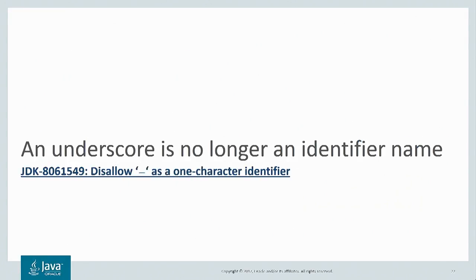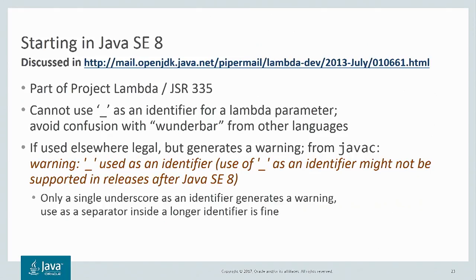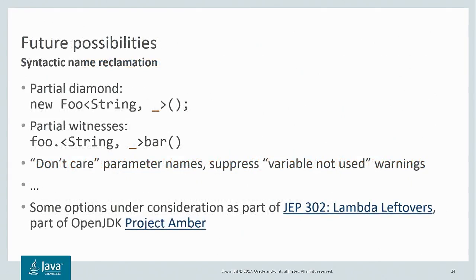The next two small language changes are updates to Project Lambda features added in JDK 8. First, underscore is no longer an identifier name. Starting in JDK 8, the compiler issued warnings if you used underscore as an identifier, warning that it might not be allowed in future versions of the platform. And indeed, now in JDK 9, it is not allowed — what was a warning message is now an error. We want to reclaim the underscore as syntactic real estate and repurpose it for more useful things, as described in JEP 302, Lambda Leftovers.